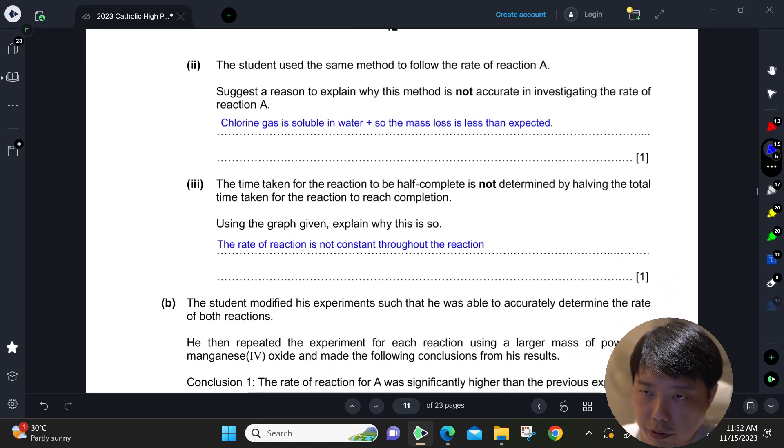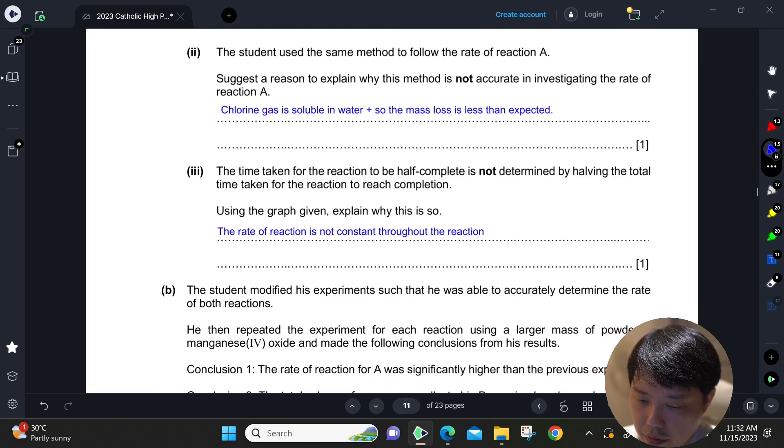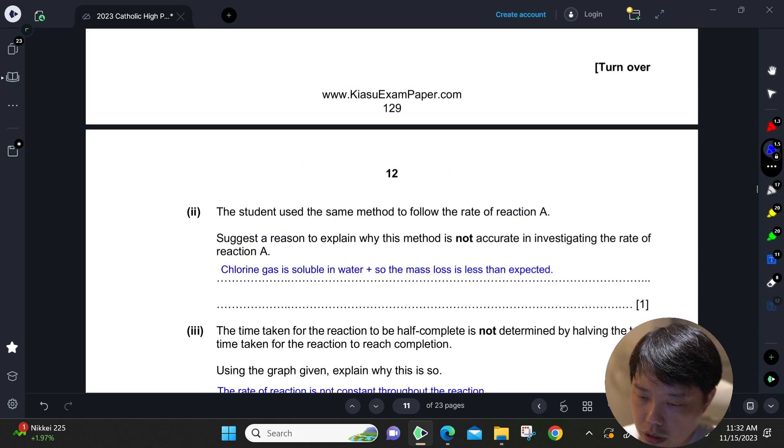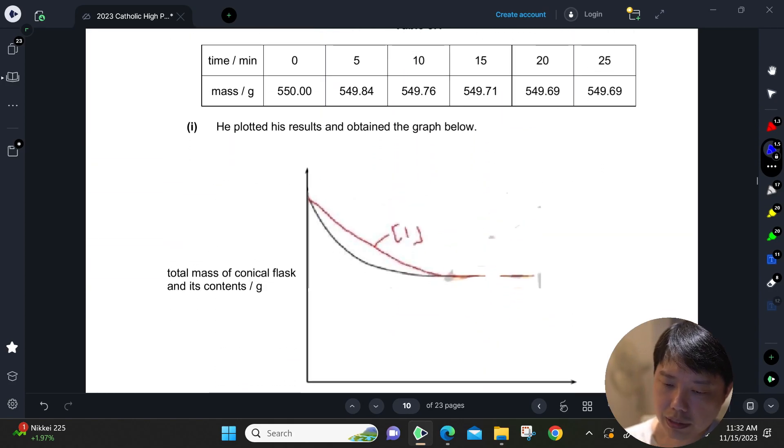So it's not really accurate in investigating the rate of reaction. The time taken for the reaction to be half-complete is not determined by halving the total time taken for a reaction to reach completion. Using the graph given, explain why this is so. Basically, if you want to get the half, you need to get a straight line.